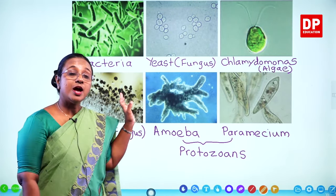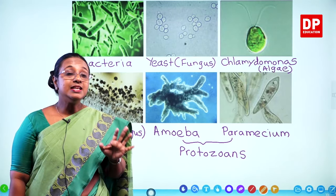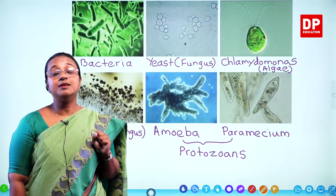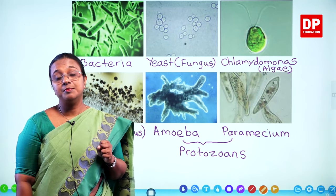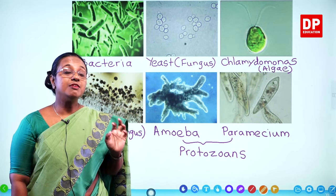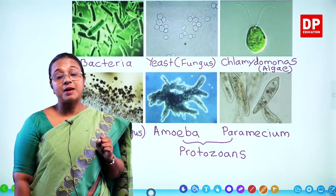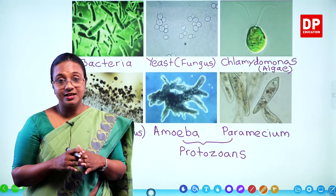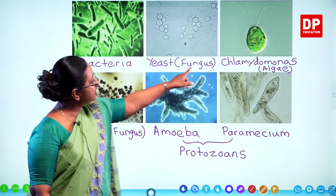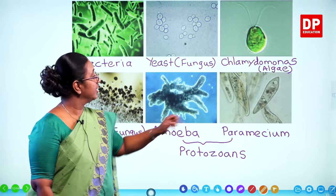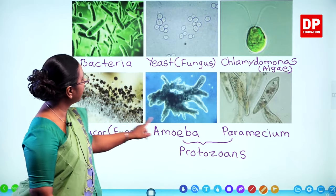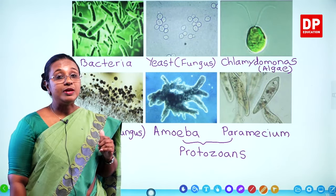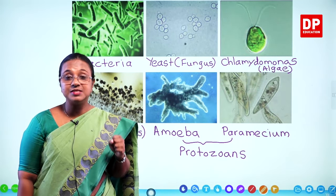We are going to observe all these in the lab using the light microscope. All these organisms are visible through the compound light microscope, but you can't see a virus through any light microscope. To observe a virus, we need to use an electron microscope, which has a different and more powerful way of magnifying. You can see that algae is autotrophic while the others are heterotrophic, illustrating the biological diversity.